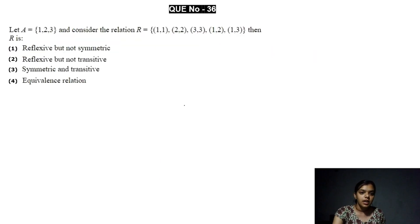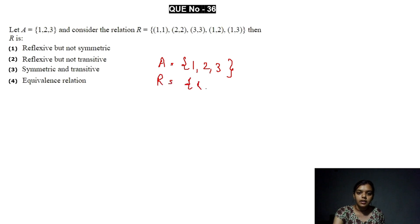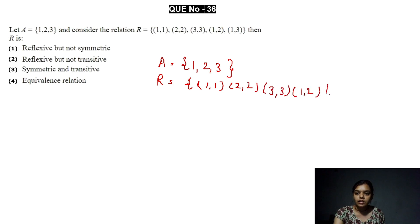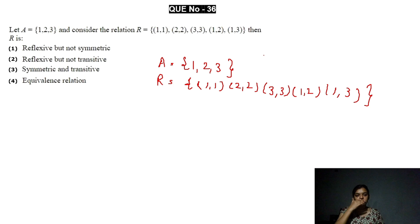The next question: we have set A = {1, 2, 3} and the relation R = {(1,1), (2,2), (3,3), (1,2), (1,3)}. We are asked whether R is: reflexive but not symmetric; reflexive but not transitive; transitive and symmetric; or an equivalence relation.